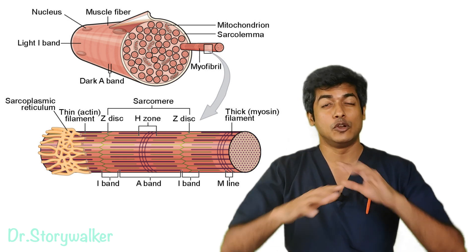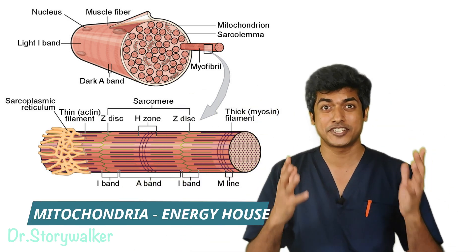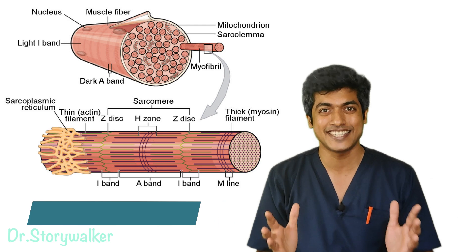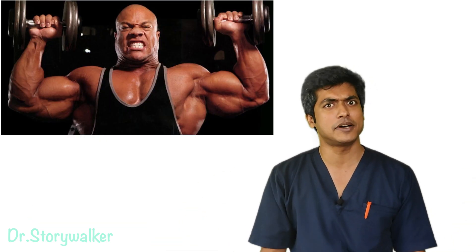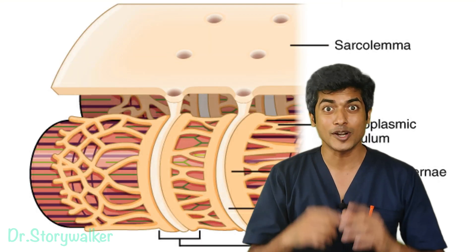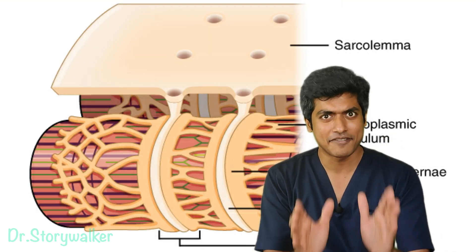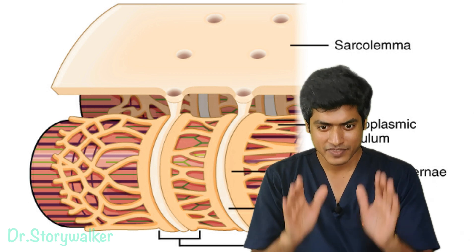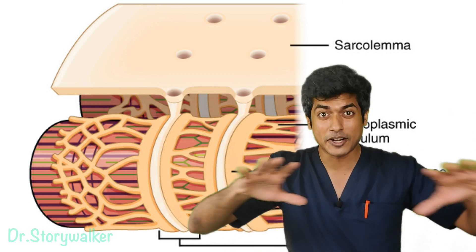There are also lots and lots of mitochondria — the energy house of the cell. So with so much energy available, muscle contraction should just be happening constantly, right? What is interesting is that each and every myofibril is surrounded by something called a reticular network.